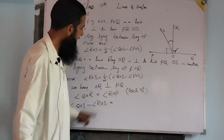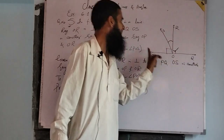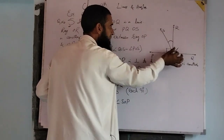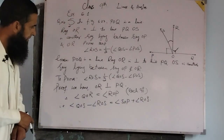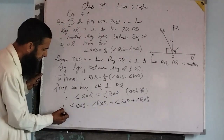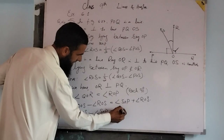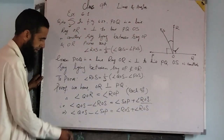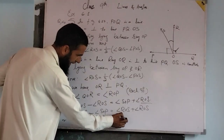Now on the right side, angle R-O-P can be written as angle S-O-P plus angle R-O-S. Now, angle R-O-S from the right side will be taken to the left side — it becomes negative there. And angle S-O-P from the left side comes to the right side. This implies: angle Q-O-S minus angle S-O-P is equal to angle R-O-S plus angle R-O-S, which equals twice angle R-O-S.